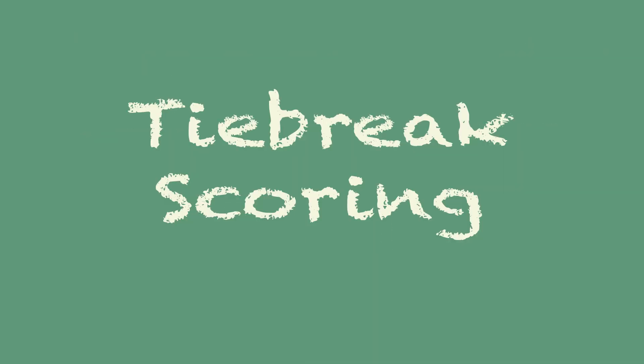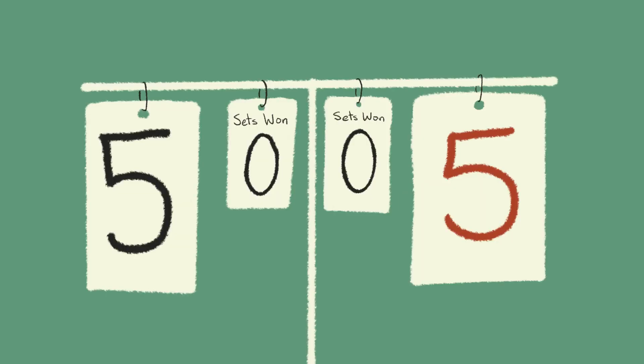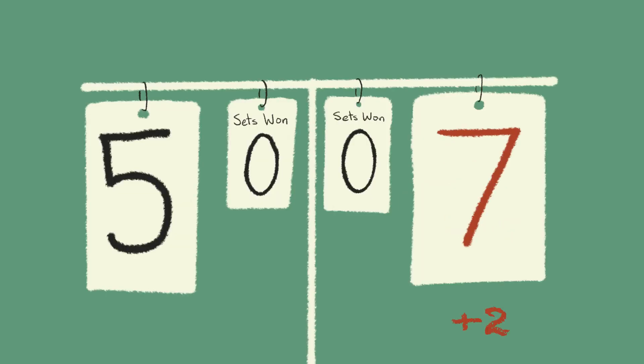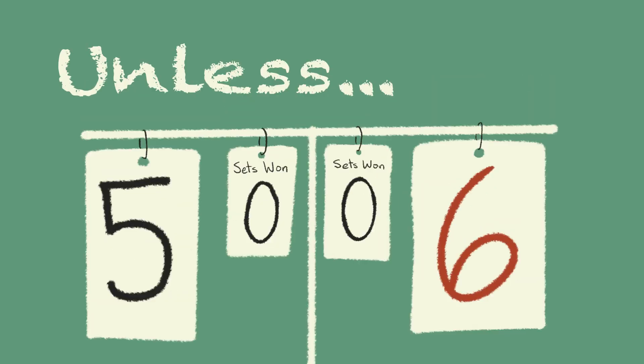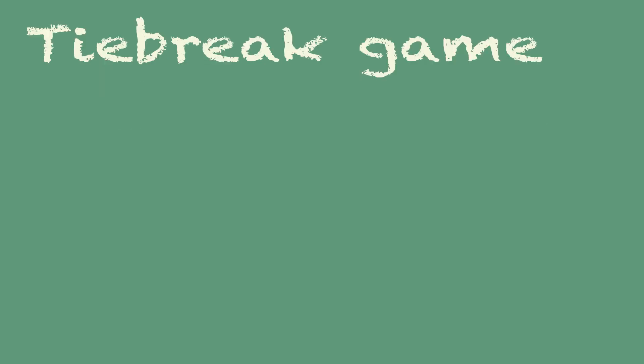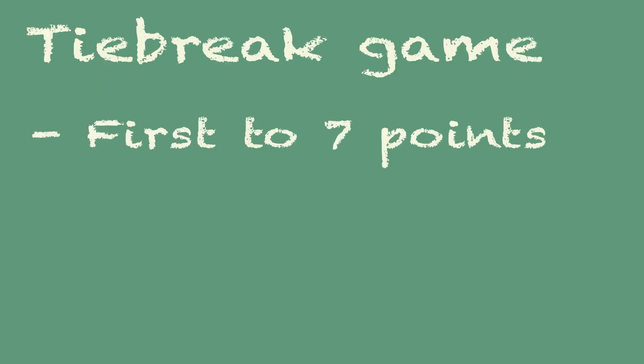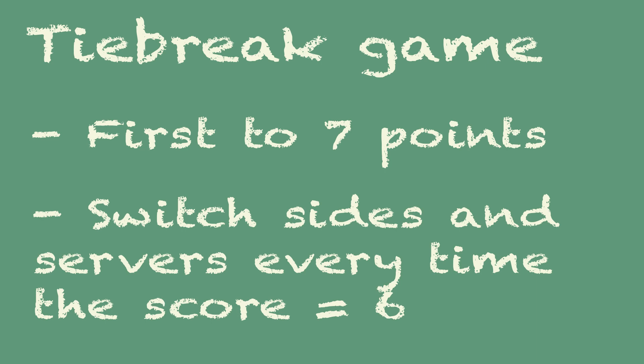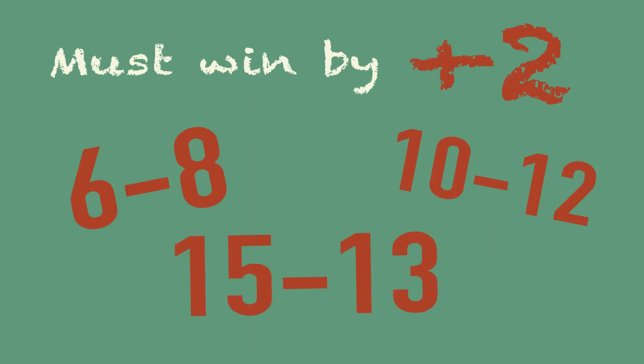If you are playing tie break sets, it's a bit more complicated. If the score reaches 5 all, one team must win the next 2 points to win the set. If the score reaches 6 all, you must play a tie break game. The goal of a tie break game is to be the first to 7 points, switching sides every time the score equals 6 points. This also includes a win by 2 rule, so these can often last a long time.